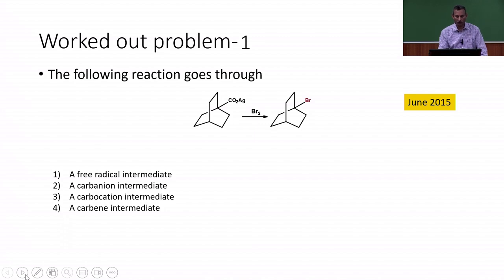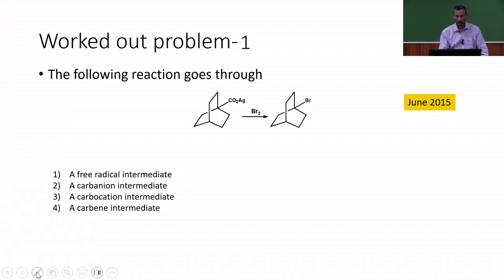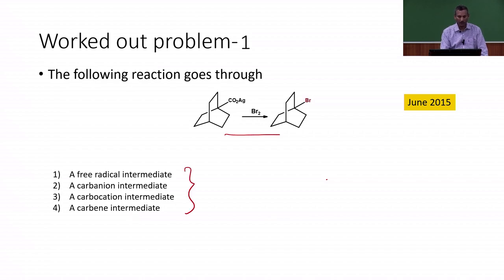The following reaction goes through — a reaction is given where a silver ester is getting converted to a halo derivative. Four different intermediates are given: a free radical intermediate, a carbanion intermediate, a carbocation intermediate, and a carbene intermediate. This question was asked in June 2015. We are going to look at how to solve this problem.